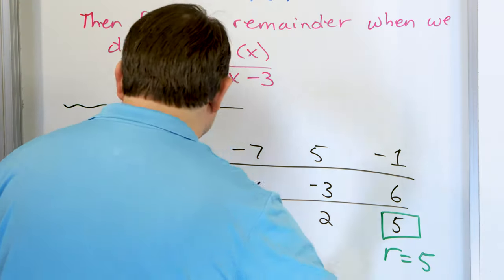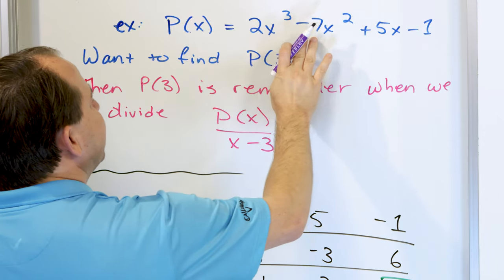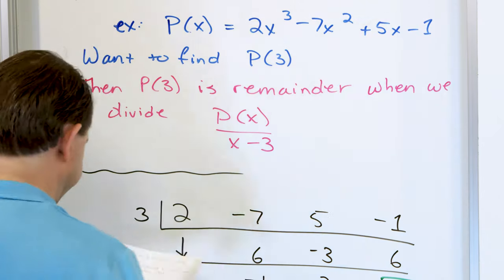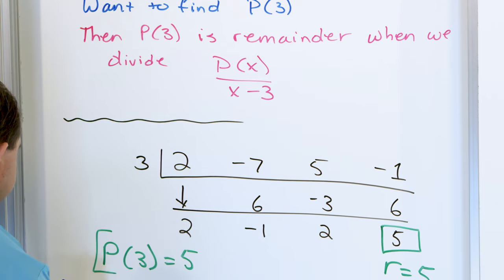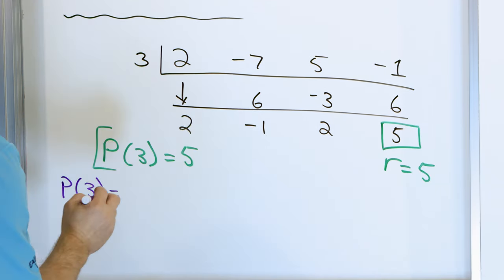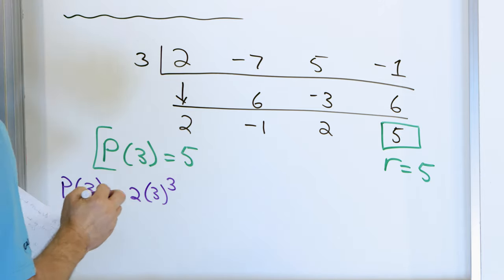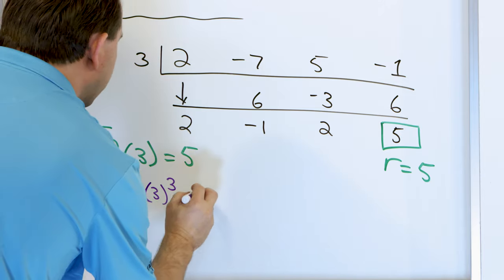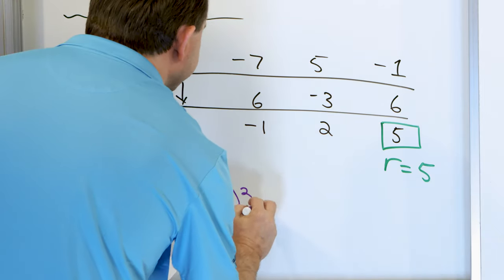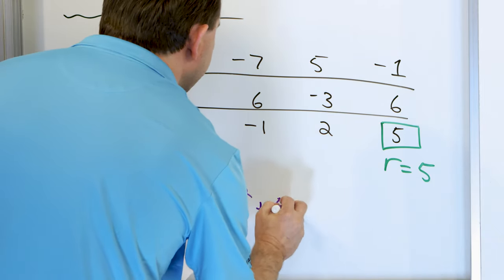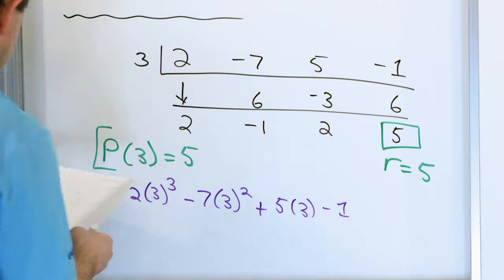The polynomial is 2x cubed minus 7x squared plus 5x minus 1. So let's evaluate p of 3: 2 times 3 cubed, minus 7 times 3 squared, plus 5 times 3, minus 1.